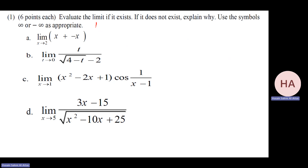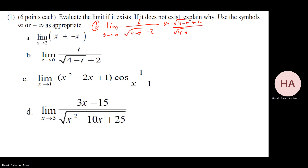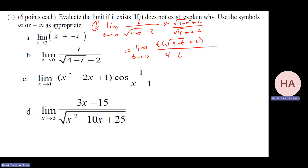Part b: limit as t goes to zero of t over square root of four minus t minus two. Rationalize by multiplying by square root of four minus t plus two. You get t times square root of four minus t plus two over four minus t minus four, which simplifies to t times the conjugate over negative t. Cancel t; substituting t equals zero gives negative times four, so minus four.